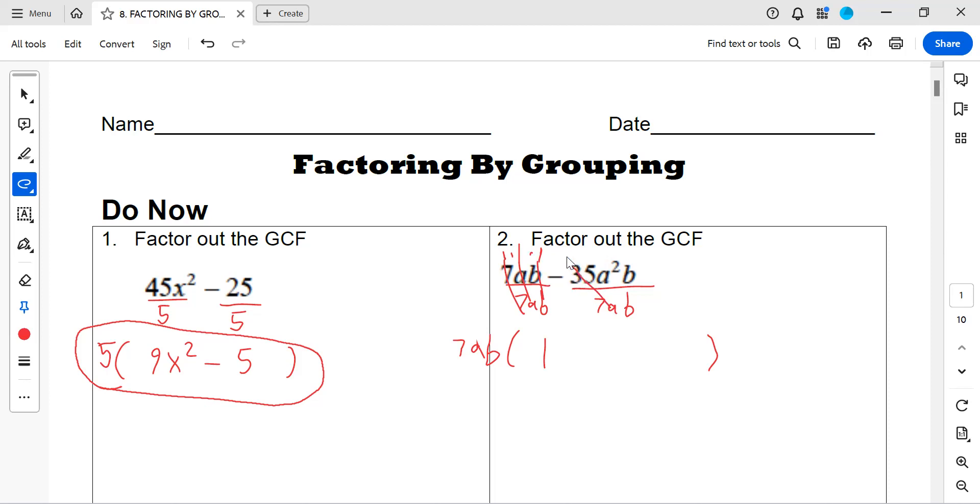I know that a² over a—I'm gonna do the exponent of 2 minus the exponent of 1 that we don't see—and that's going to give me a to the first power. And then the b's are going to cancel to give me a 1. So negative 5a times 1 is going to give me minus 5a.